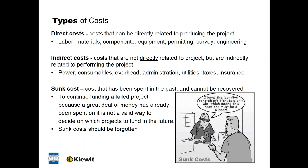Additionally, there are indirect costs for the project that should be accounted for, specifically when you're budgeting. That may be power, consumables, overhead, administration, utilities, taxes, and insurance. The third type of cost is sunk costs — costs already spent on the project that cannot be recovered. It's important to note that continuing to fund a failed project due to sunk costs may not be a valid way to decide which projects to fund in the future.